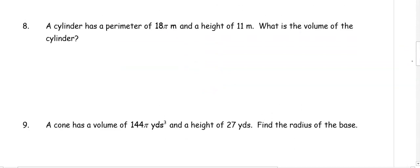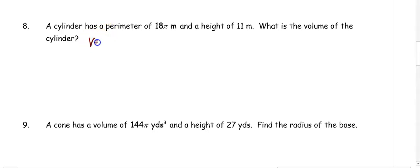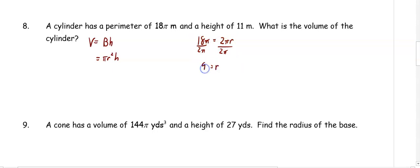In number eight, a cylinder has a circumference of 18 pi meters and a height of 11 meters. What is the volume of the cylinder? The volume of the cylinder is base area times height, which is pi r squared times the height. We need to find the radius. If the circumference is 18 pi, then 18 pi equals 2 pi r, and dividing by 2 pi on both sides gives us a radius of 9. So we have pi times 9 squared times the height of 11, and we get 891 pi meters cubed.